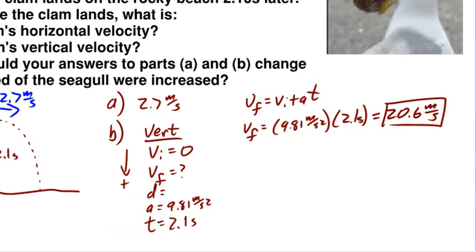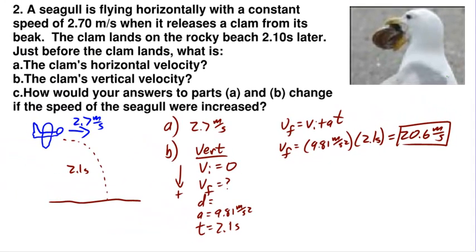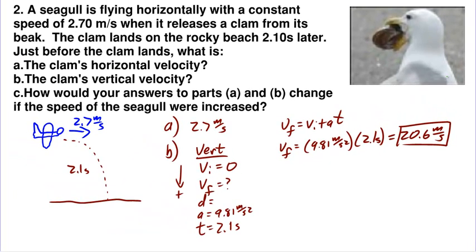Part C asks: how would your answers to parts A and B change if the speed of the seagull were increased? For part A, if the seagull's speed were increased, the clam's horizontal velocity when released would increase as well — so that would increase. For part B, the vertical velocity isn't going to change no matter how fast the seagull goes horizontally. Therefore, no change in the vertical velocity right before it hits the ground. Of course, we're neglecting air resistance in these problems.